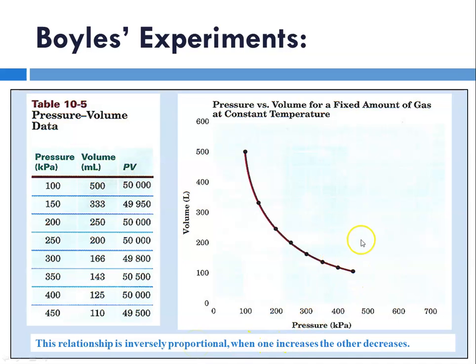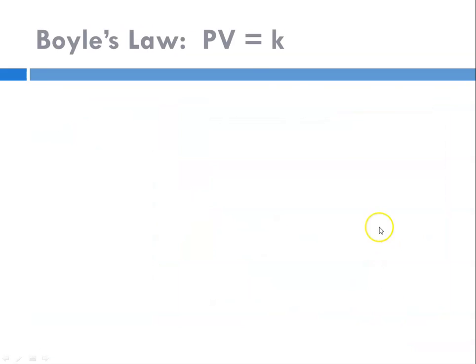Typically when you have an inverse relationship like that, when you multiply them together they equal a constant. So pressure times volume is equal to some constant.